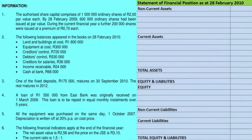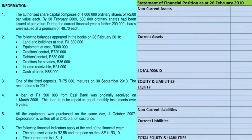Let's look at number one. We are told that the authorized share capital comprises of one million ordinary shares at two rand par value each. By 28 February 2009, that is at the end of the previous financial year, 600,000 ordinary shares had been issued at par value. And during the current financial year, a further 200,000 shares were issued at a premium of 70 cents each. There is a difference between authorized share capital and issued share capital. Authorized share capital is the maximum amount of shares that can be issued by a company, while issued share capital is the amount of shares already held by shareholders.